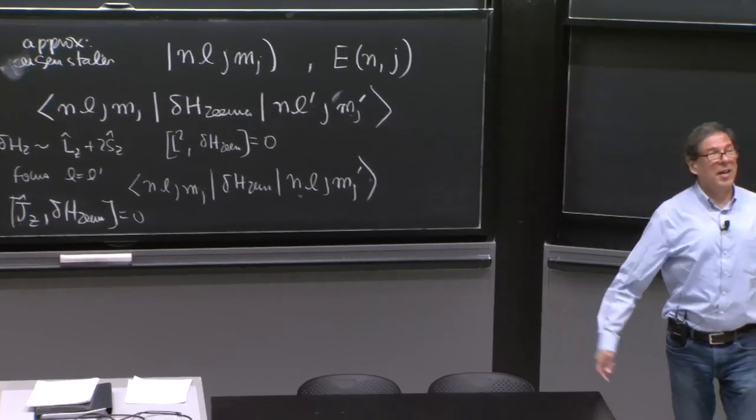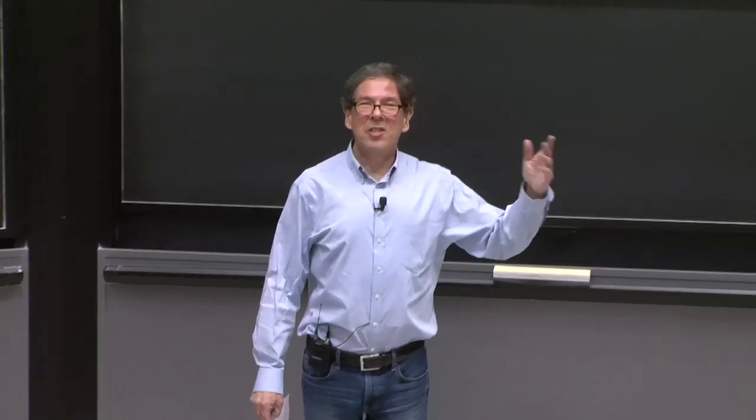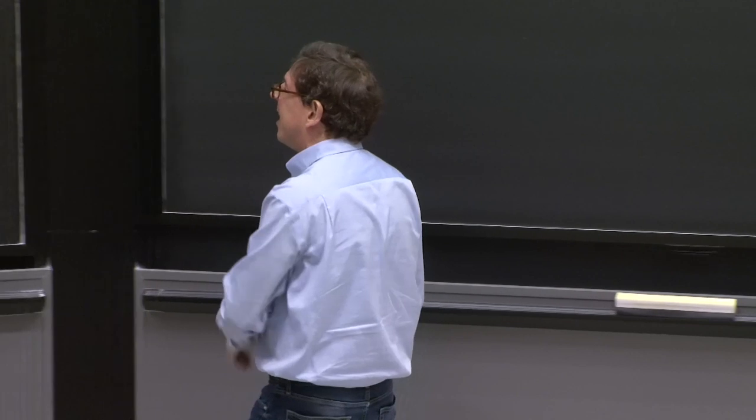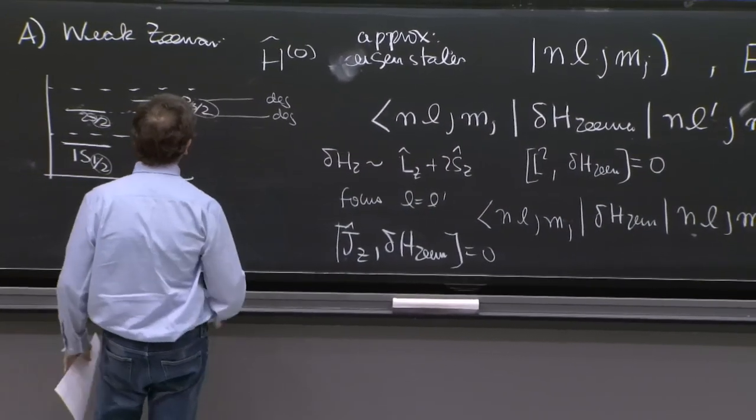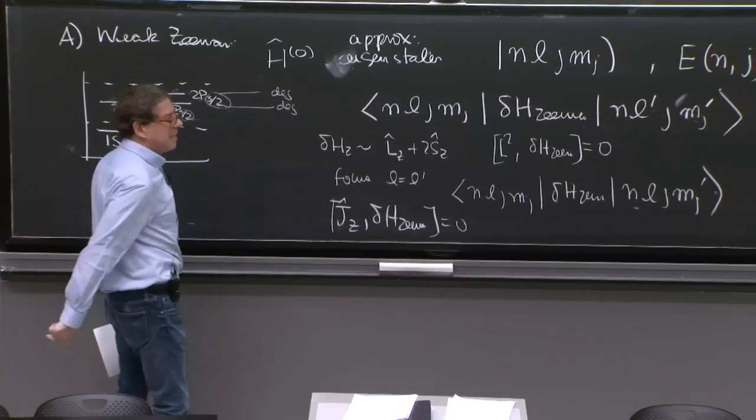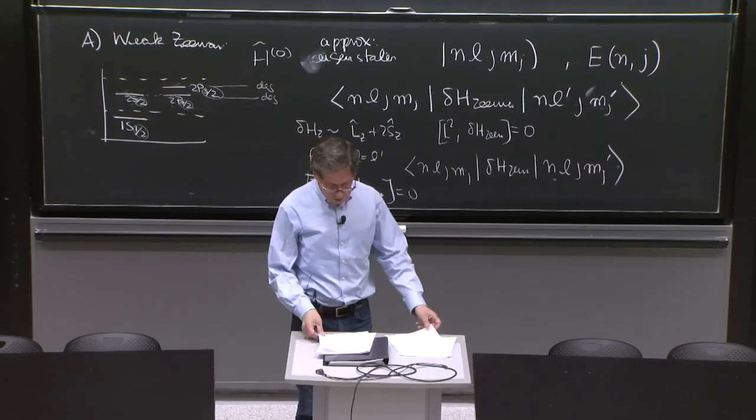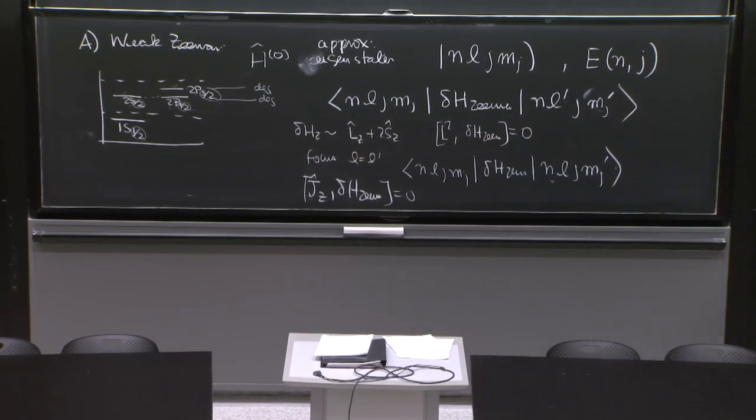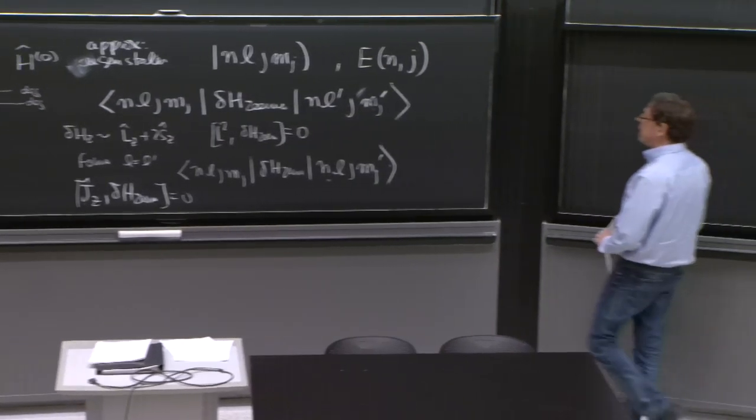And that's great, because you're back to non-degenerate perturbation theory. The whole matrix, this Zeeman thing could have turned out to be complicated matrices. No, it's perfectly diagonal in this basis. There's nothing to worry about here. Except that it's still not easy to compute, as we will see.